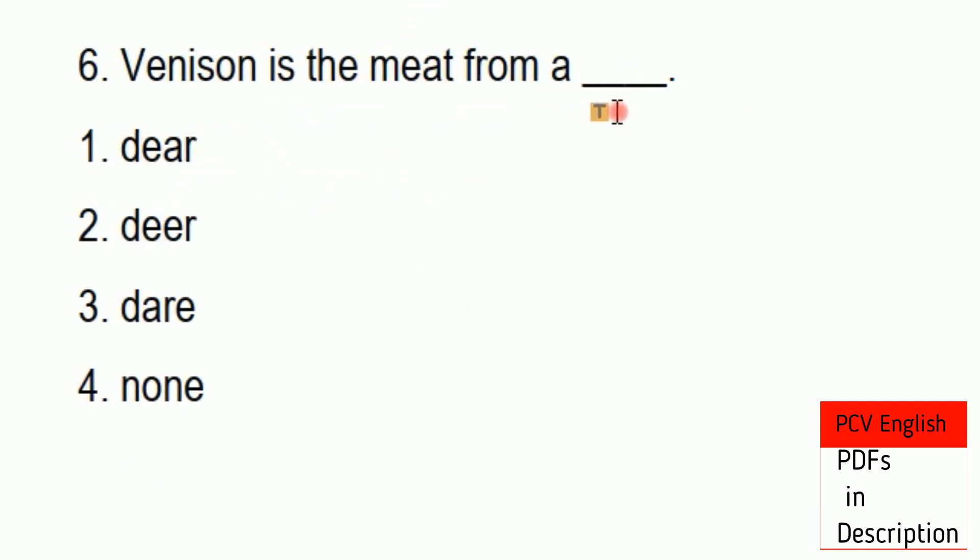Venison is a meat from dash. Venison means deer meat. Deer means the animal. Dear means lady or beloved. Deer means that it is a deer, the animal. So venison means deer meat. We will get meat from a deer.